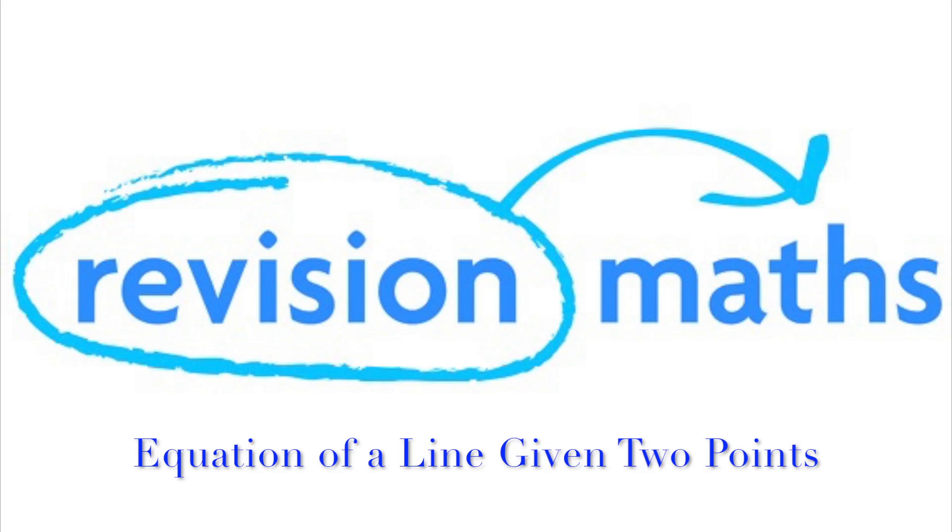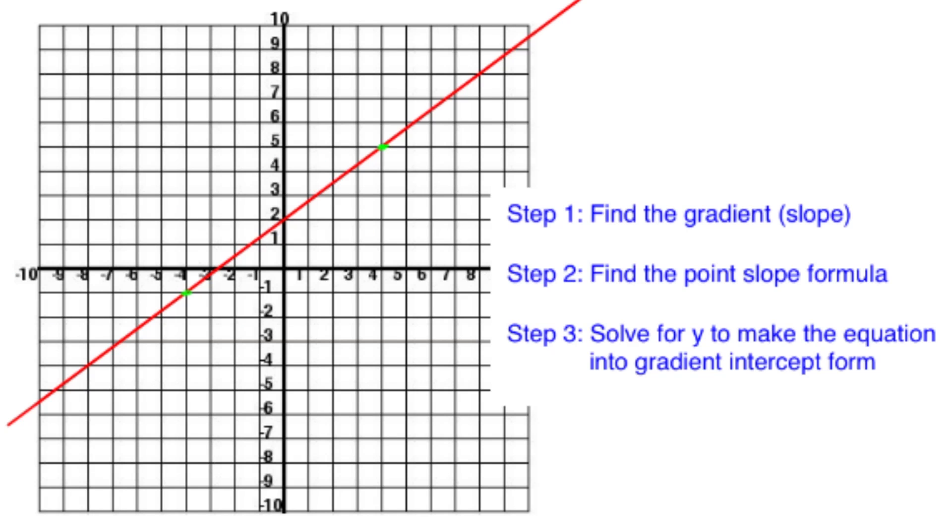Hi and welcome to another video from visionmaths.com on finding the equation of a line given two points. As you can see here, I've mapped out a line on graph paper and we'll be using the points (-4, -1) and (4, 5).